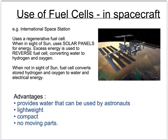The advantage of such a fuel cell is it can provide water from hydrogen and oxygen, which can then be used by the astronauts. Of course, that water is re-harvested and finds its way back into the fuel cell. It's also lightweight, compact, has no moving parts and doesn't require a flame, which means it's much safer to use in these conditions.